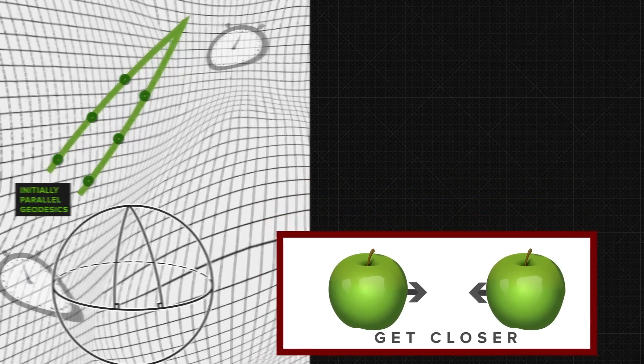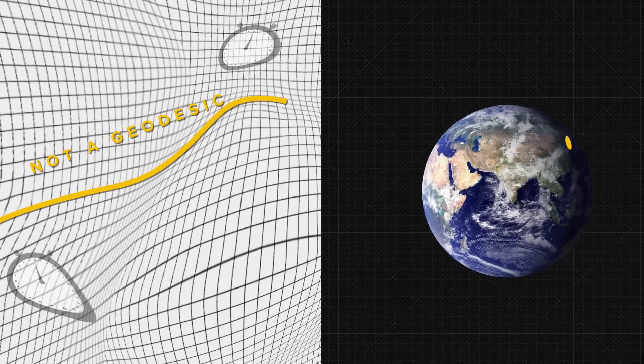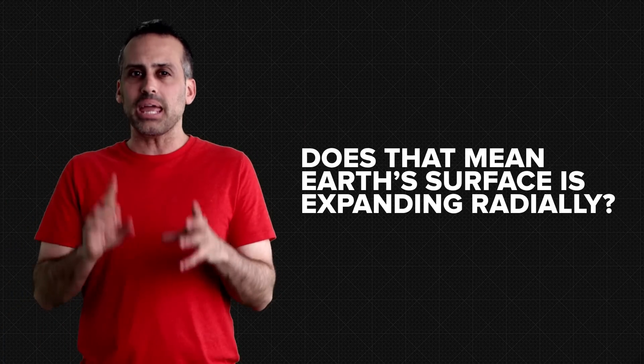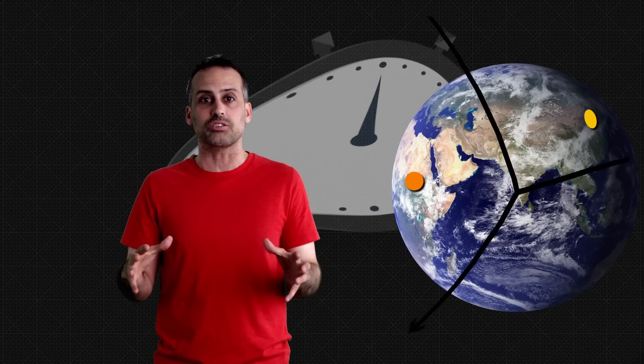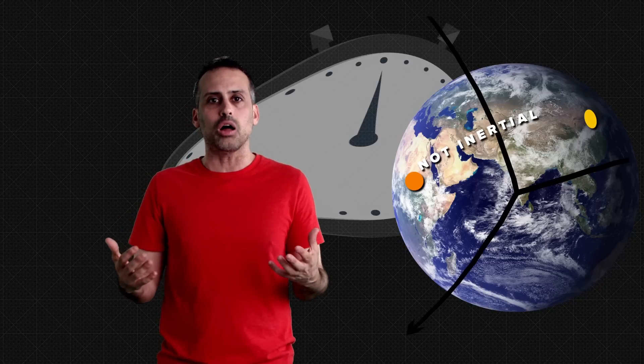In contrast, the world line of a point on Earth's surface is not a geodesic. It has a net force on it, and it's really accelerating. So does that mean that Earth's surface has to be expanding radially? Well, be careful. In order to compare distant parts of Earth, you'd need a single frame that extends across spacetime patches. But that frame can't be inertial. So any conclusions you base on it have to be interpreted with a heavy grain of salt.